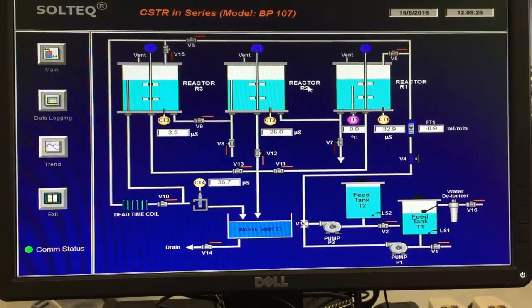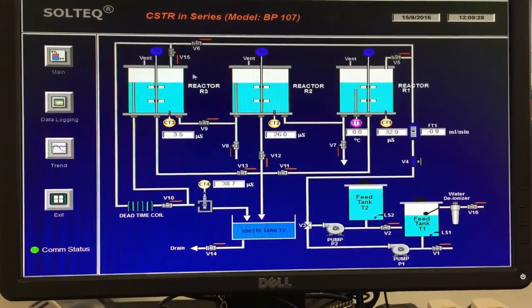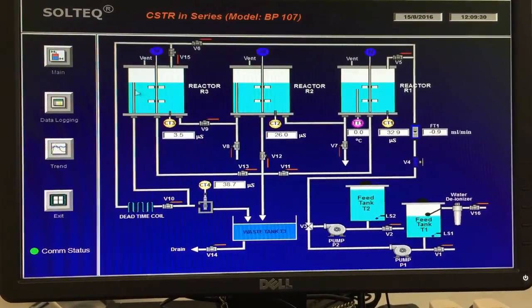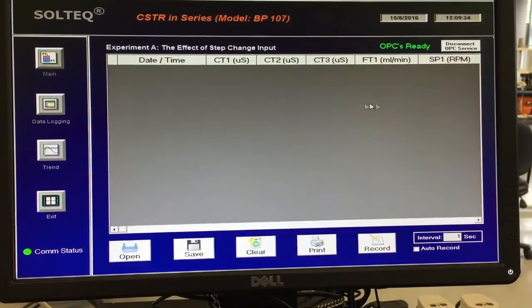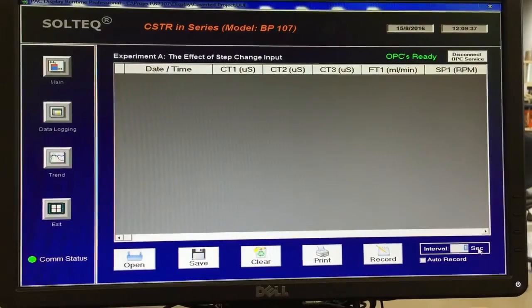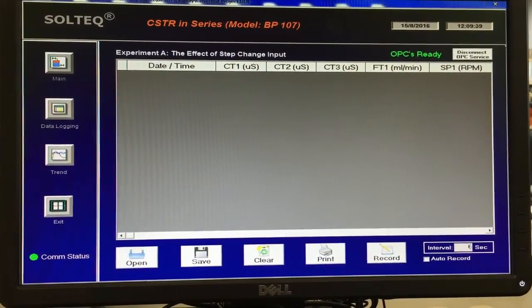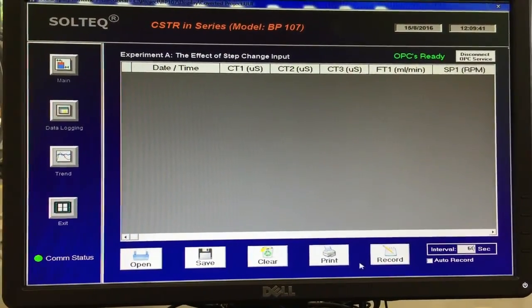We then open the data acquisition system. The cursor is directed towards data logging and experiment A is clicked. Conductivity values of CT1, CT2 and CT3 is recorded at suitable intervals. Continue recording all the conductivity values until all readings are almost constant.